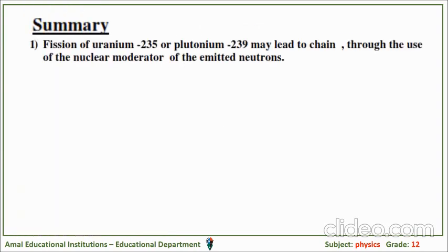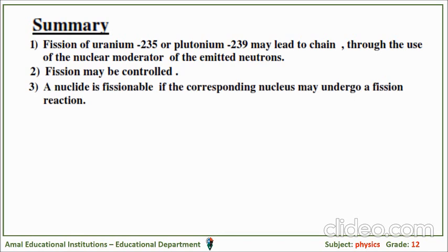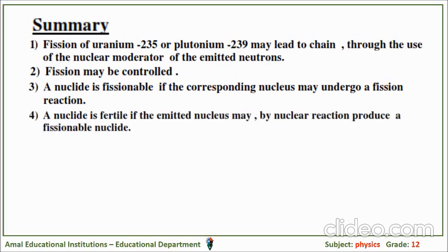As a summary, the fission reaction of uranium-235 or plutonium-239 may lead to a chain reaction. Through the use of a nuclear moderator, the emitted neutrons' fission may be controlled. A nuclide is fissionable if the corresponding nucleus may undergo a fission reaction. A nuclide is fertile if the resulting nucleus may, by nuclear reactions, produce a fissionable nuclide.